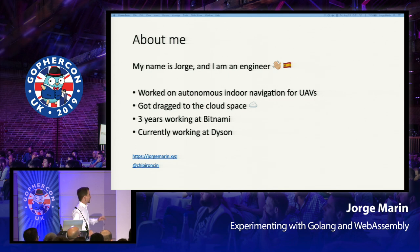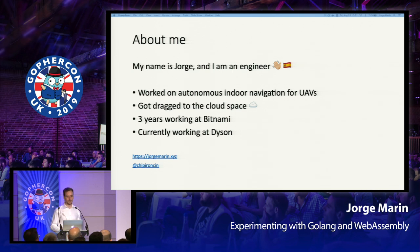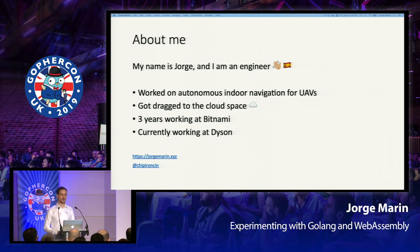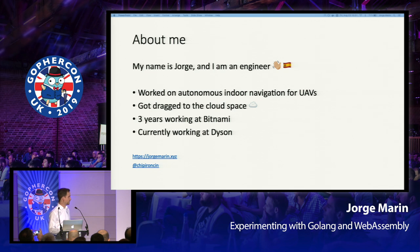A quick about me: my name is Jorge, I'm an engineer. I work in autonomous indoor navigation for UAVs — Unmanned Aerial Vehicles, basically drones — and then got back to the cloud space. After three years working at a startup called Bitnami that was recently acquired by VMware, I started working at Dyson. Here you have my personal web page and my Twitter handle.